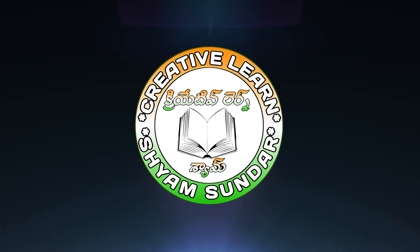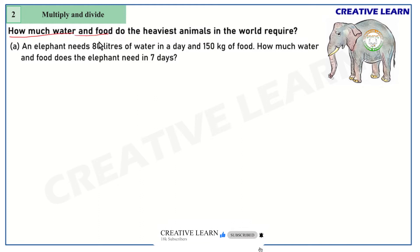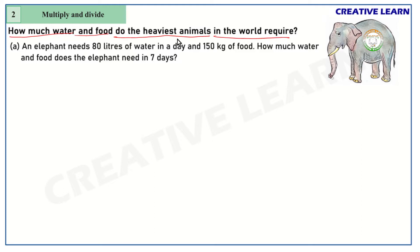Hello everyone, welcome to Creative Land channel. Here we are going to continue our exercise from the second chapter — multiply and divide. The topic is: how much water and food do the heaviest animals in the world require? Some questions are given; all questions are asking about the amount of water and food required by the heaviest animals.